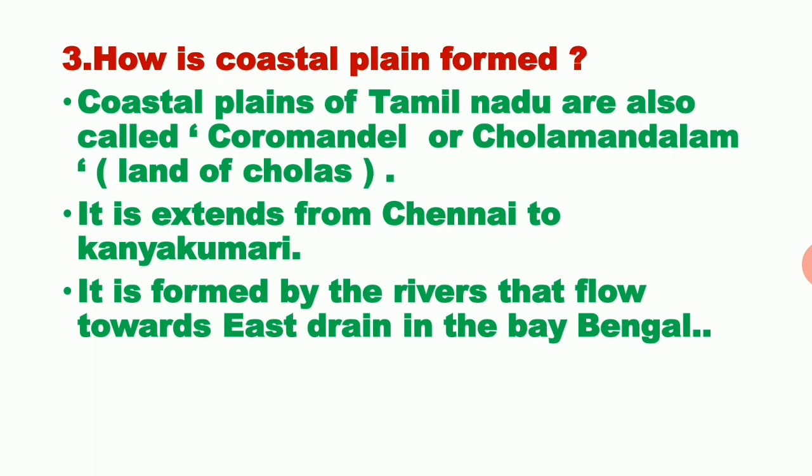Next question: How is coastal plains formed? The plains are of two types: river plains and coastal plains. Coastal plains of Tamil Nadu are also called Koramandal or Cholamandalam, meaning land of Cholas. India has two coastal plains — west coastal plains and east coastal plains. Tamil Nadu has east coastal plains, which are further divided into two types: the northern part is called Northern Sargar, and the southern part is called Koramandal or Cholamandalam.